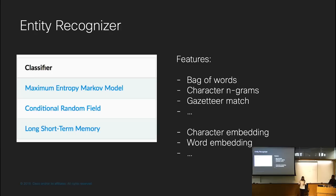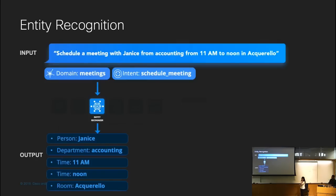Back to our example: now in the meetings domain, schedule meeting intent, we note that Janice is extracted as a person named entity, Accounting is a department, 11 AM and noon are time entities, and Aquarello is a conference room entity.